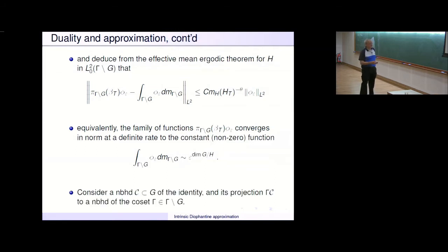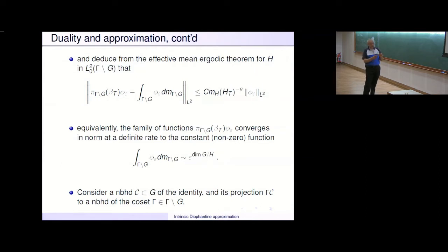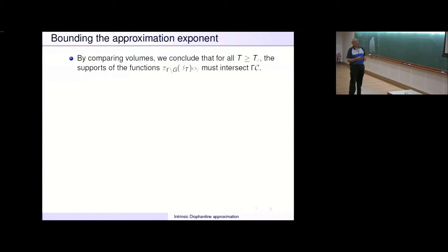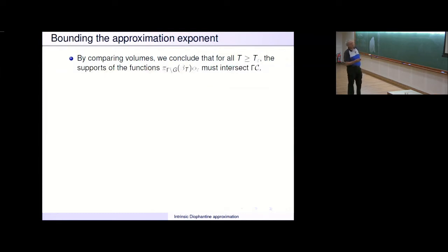This implies that if we consider some fixed neighborhood C of the identity in G and project gamma·C to a neighborhood of the coset gamma in gamma\G, we can keep track of how fast these averages actually become constant. Then we can conclude that for all large enough T, the supports of these functions — which are almost a positive constant — must intersect this little neighborhood, because they cannot stay away from it forever. They have to become a constant.